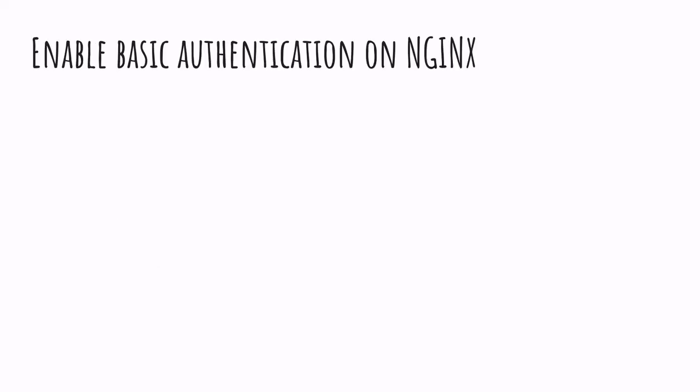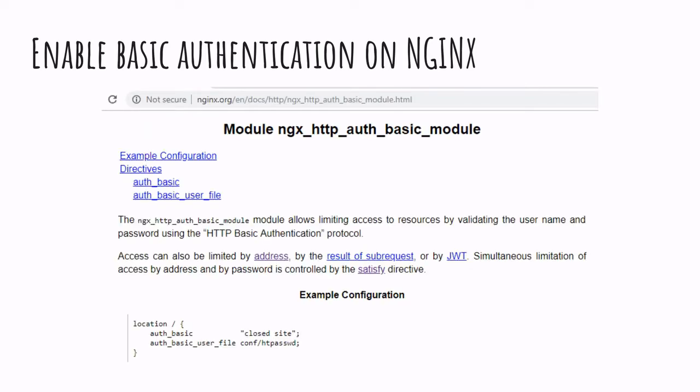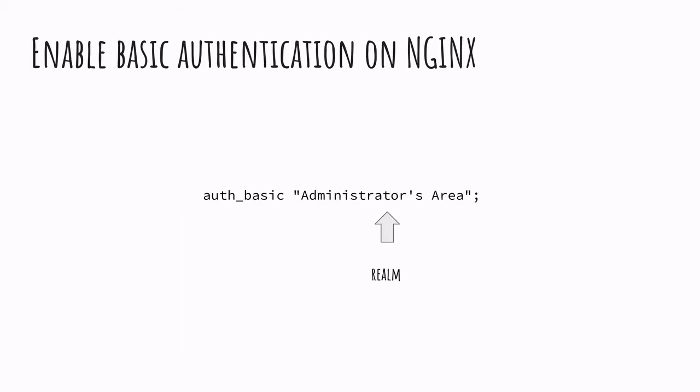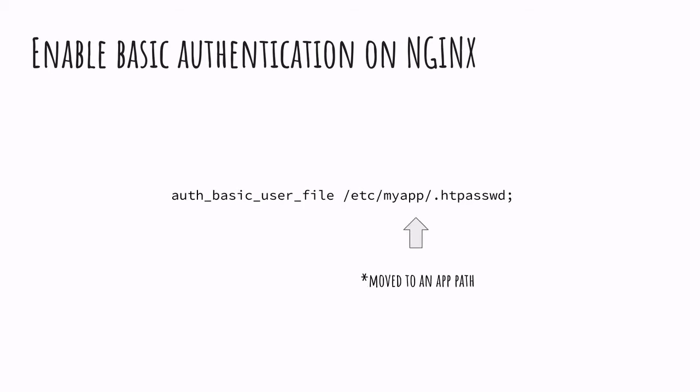In order to enable basic authentication on Nginx, all we need to do is use the auth_basic module from Nginx. It consists of two directives: one that sets the realm of the authentication, and another one that provides the path to the file that we just created with htpasswd.